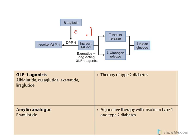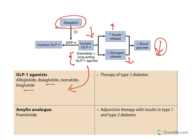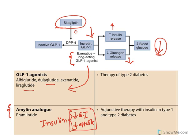GLP-1 increases insulin release and reduces glucagon release, reducing blood glucose and treating hyperglycemia. GLP-1 is metabolized by dipeptidyl peptidase-4, which can be inhibited by sitagliptin and saxagliptin. GLP-1 agonists are also available — dulaglutide, albiglutide. Additionally, there is an amylin analog: amylin is released along with insulin, reduces GI transit time, and reduces appetite, thereby helping control hyperglycemia. Amylin analogs must be given intravenously.